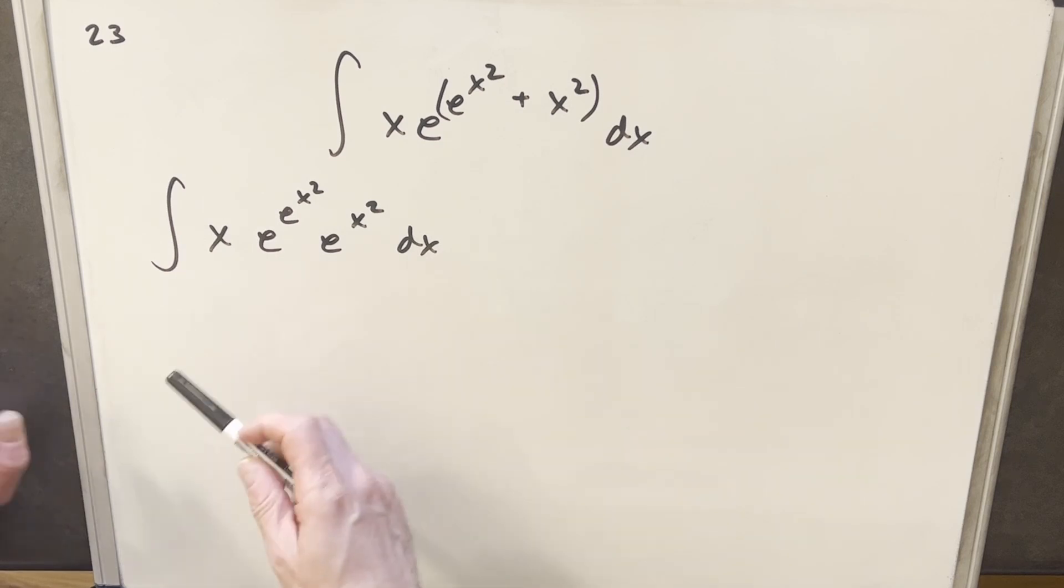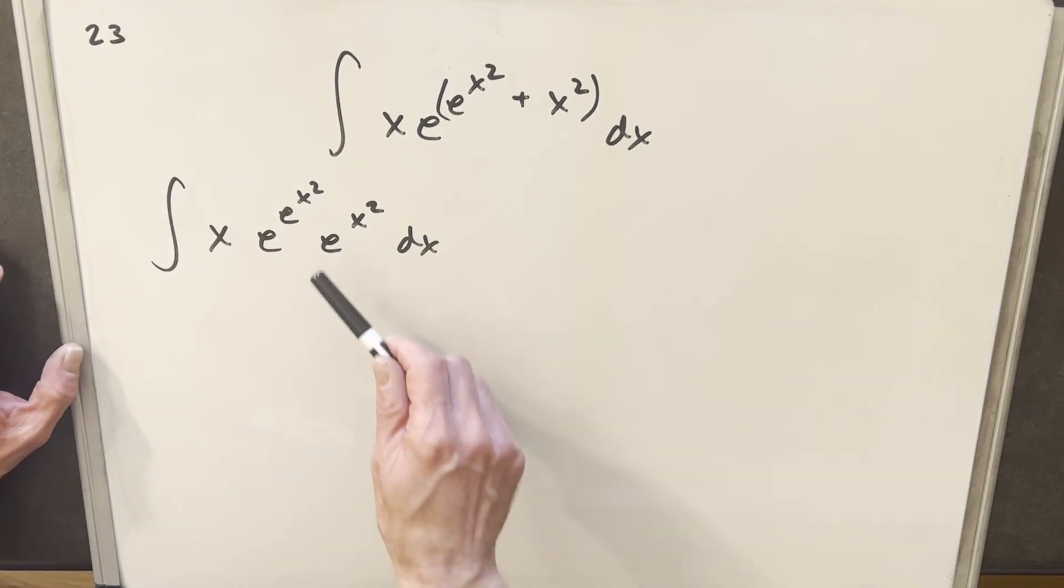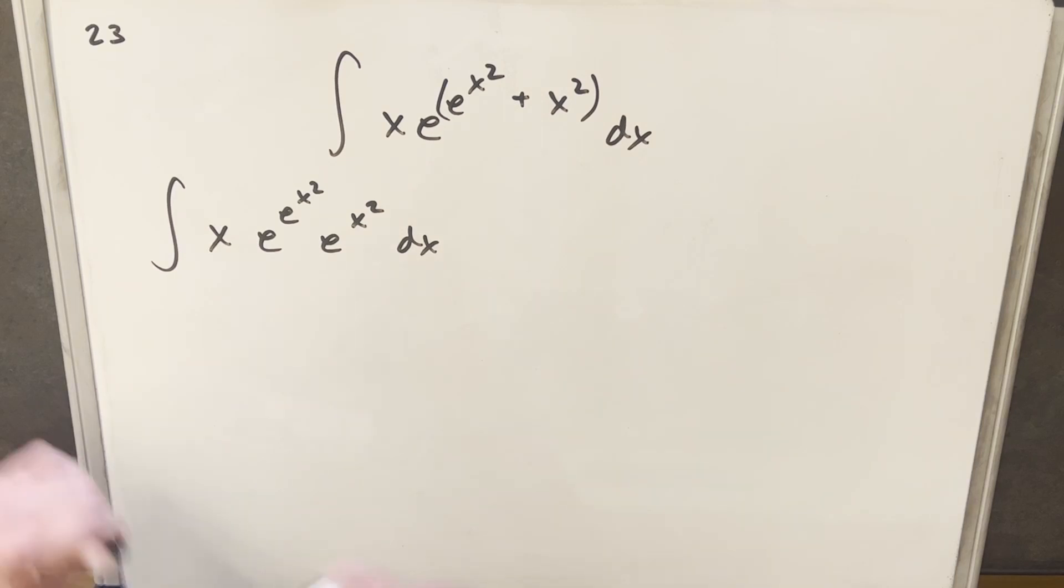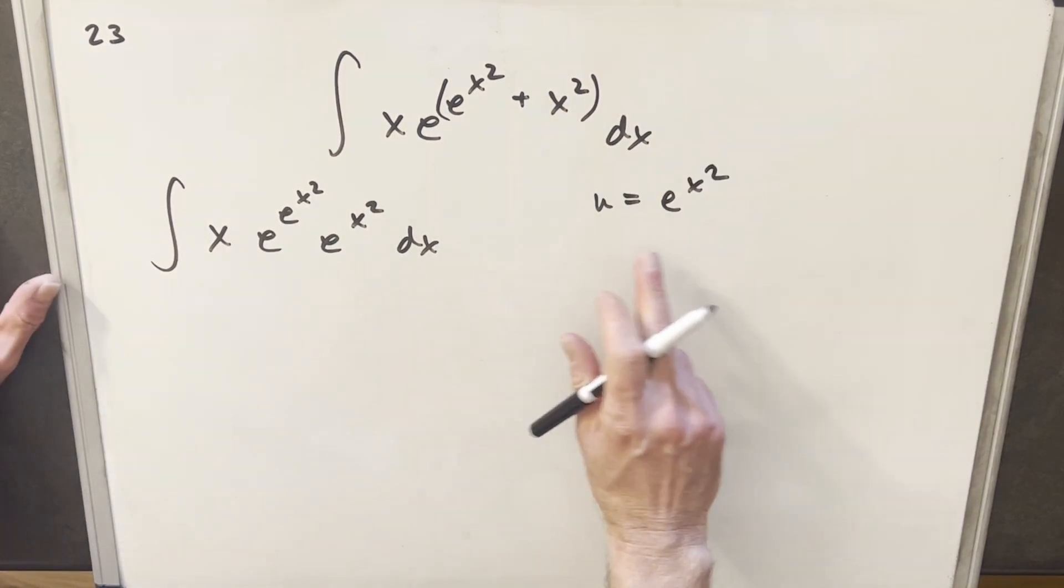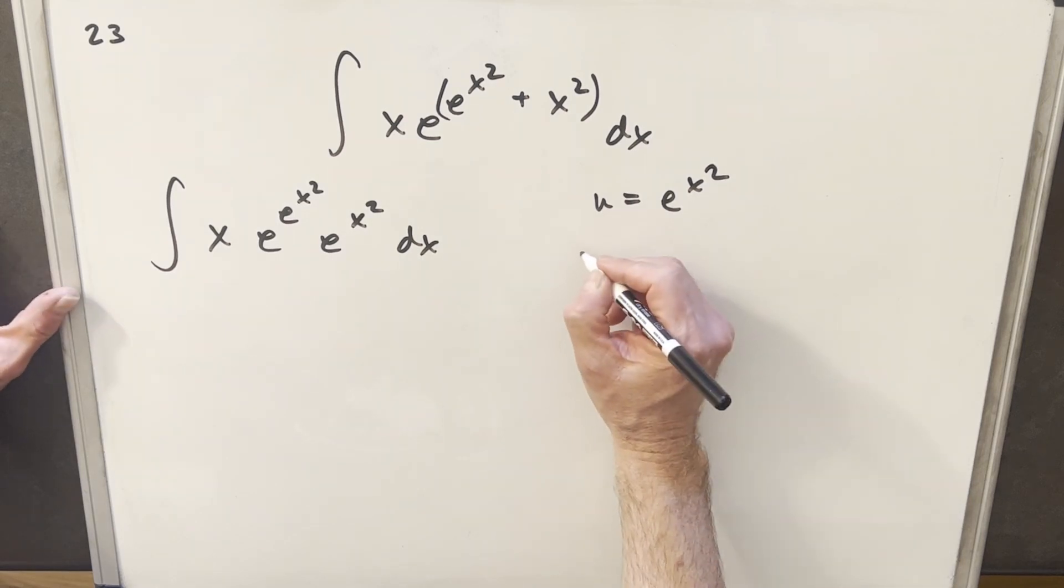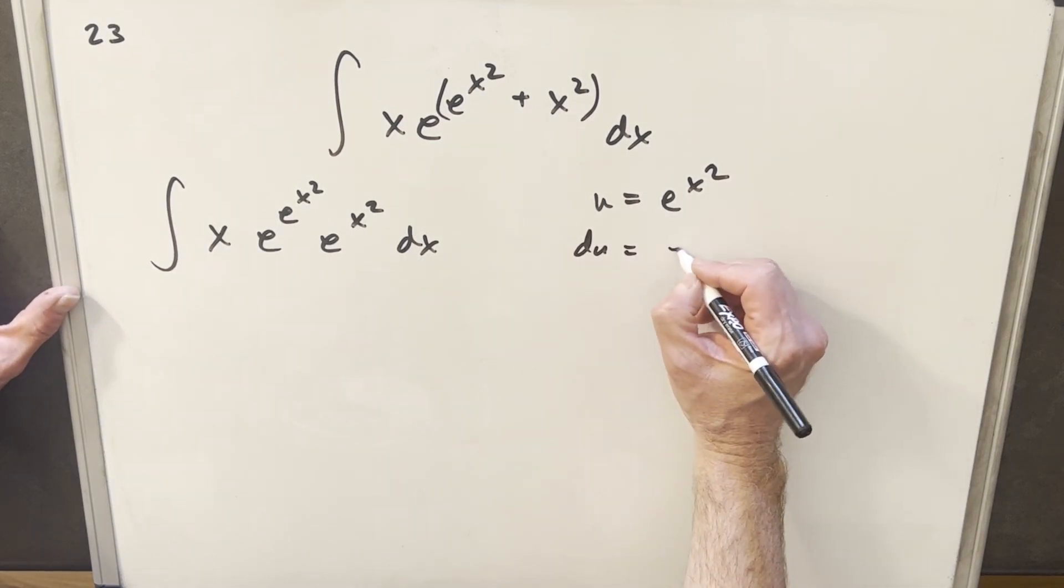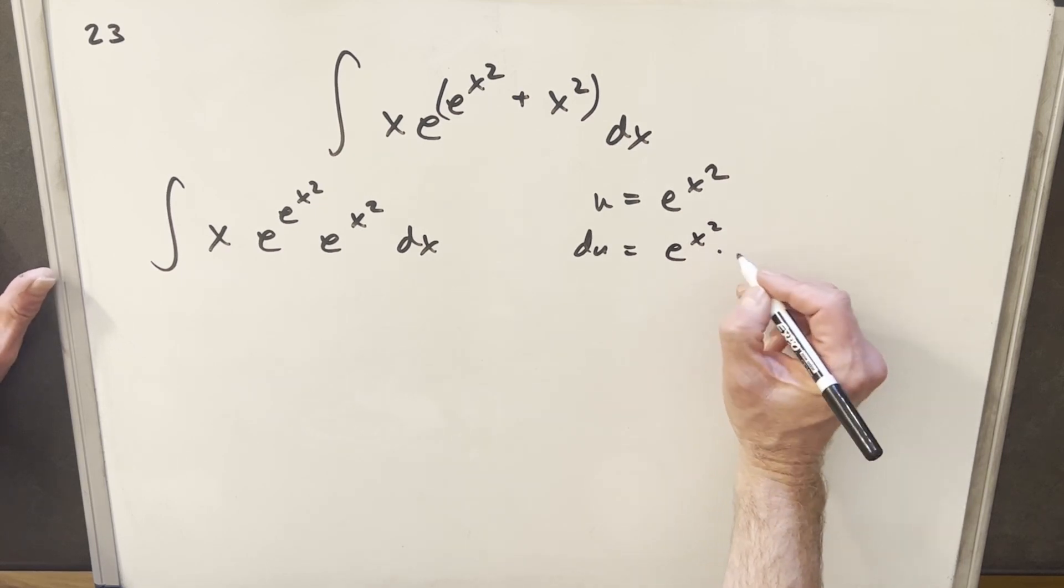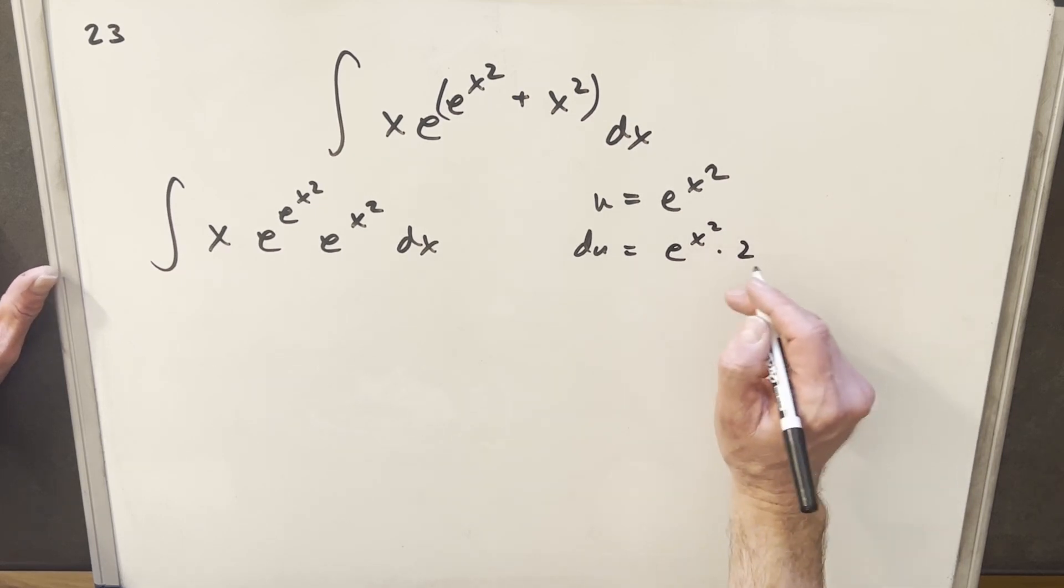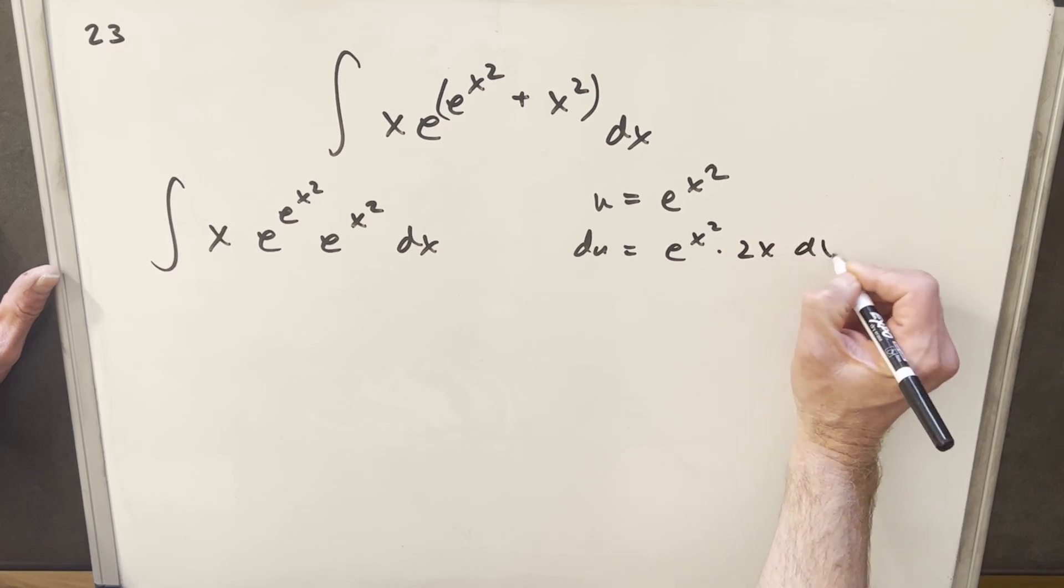From here, the thing that sticks out to me is this similarity that we have. We have an e to the x squared here, but we also have an e to the x squared here, which says to me that it might be a good time to do a u substitution. So I'll make our u equal to e to the x squared, and then I'll take my derivative, and we're going to have e to the x squared, but we're going to need the chain rule on this. And so we'll multiply derivative of x squared. It's going to be 2x dx.